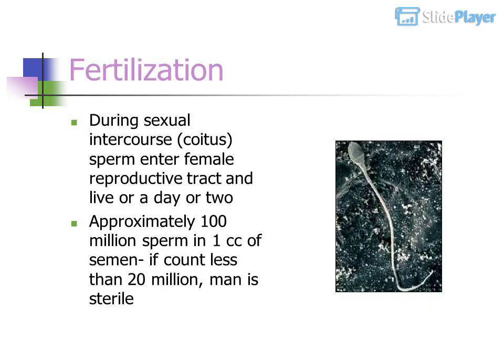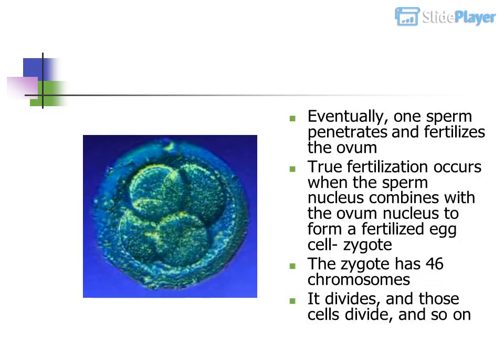During sexual intercourse (coitus), sperm enter the female reproductive tract and live for a day or two. Approximately 100 million sperm are found in one cc of semen; if the count is less than 20 million, the man is considered sterile. Eventually, one sperm penetrates and fertilizes the ovum. True fertilization occurs when the sperm nucleus combines with the ovum nucleus to form a fertilized egg cell — the zygote.